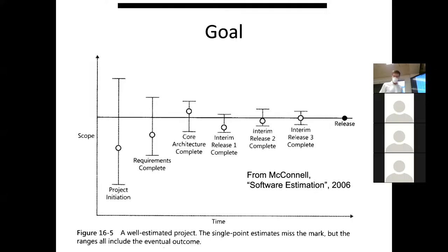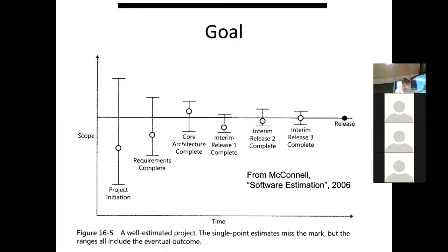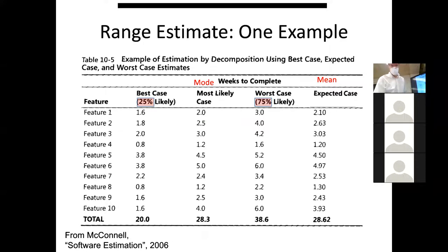Over time you often get more and more certain about how long a project will take, but that's typically matched with less and less ability to do anything about it — the features are already set, much of the work is already done. But you get progressively clearer on timing as you go. Range estimates help communicate this evolving certainty.